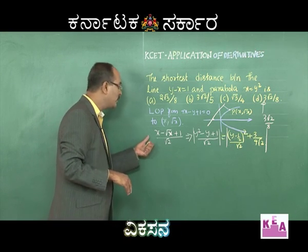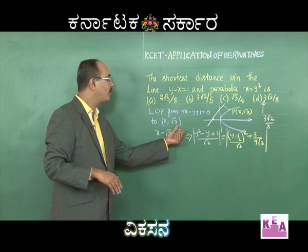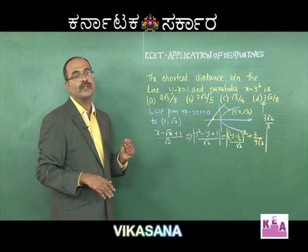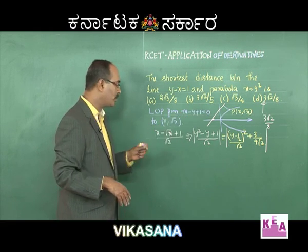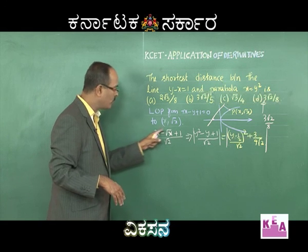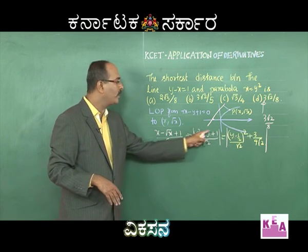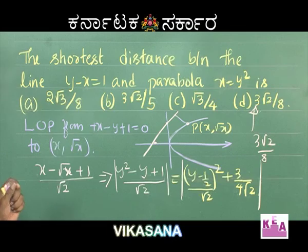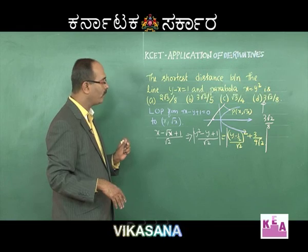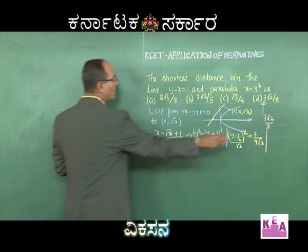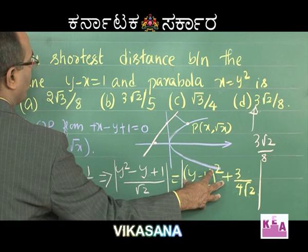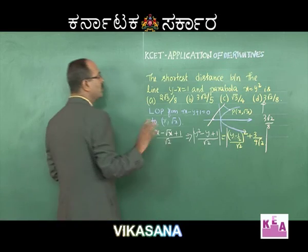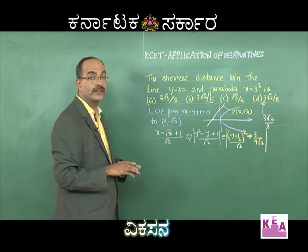The concept is simple: consider the point as (x, √x) or (y², y). Find the length of perpendicular from x − y + 1 = 0, giving |x − √x + 1|/√2 or |y² − y + 1|/√2. Completing the square gives the least value 3/(4√2) = 3√2/8.